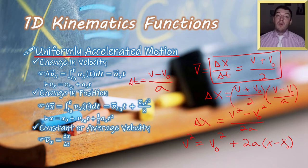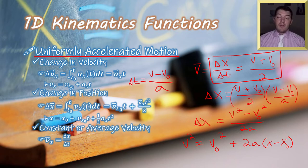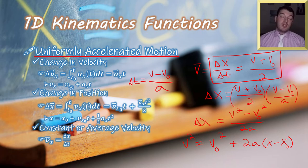It's important to note that in each of these equations acceleration must be constant, and all of them relate four different variables. If you don't have time and aren't looking for time, use the equation without time in it. If you don't have displacement and aren't looking for displacement, use the equation without displacement. In multi-step problems, you might use one equation to find time and then use another equation to find the variable you're ultimately solving for.